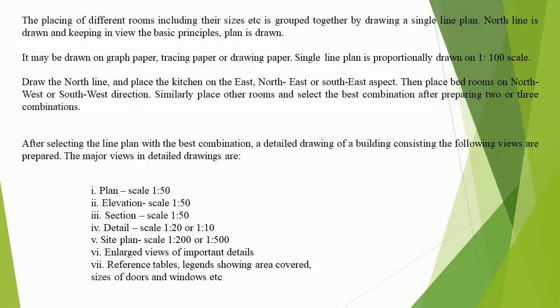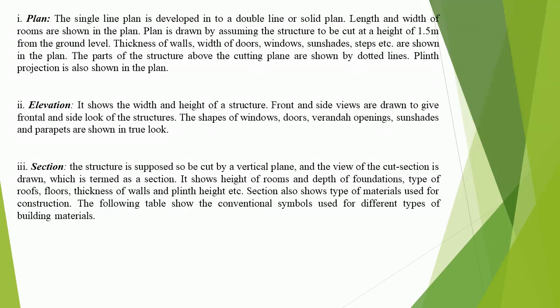6. Enlarged views of important details. 7. Reference tables and legends showing area covered, sizes of doors and windows etc. The single line plan is developed into a double line or solid plan. Length and width of rooms are shown in the plan. Plan is drawn by assuming the structure to be cut at a height of 1.5 m from the ground level. Thickness of walls, width of doors, windows, sunshades, steps etc. are shown in the plan. The parts of the structure above the cutting plane are shown by dotted lines. Plinth projection is also shown in the plan.